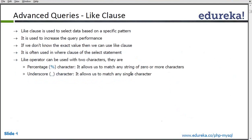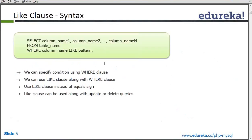If we don't know the exact value, then we can use the LIKE clause. For example, if we are searching for a particular name but don't know the exact name, we will use the LIKE query. It is often used in the WHERE clause of a SELECT statement — it's a conditional clause. The LIKE operator can be used with two wildcard characters: percentage (%) meaning zero or more characters, and underscore (_) meaning a single character. The syntax is: SELECT columns FROM table_name WHERE column_name LIKE pattern.